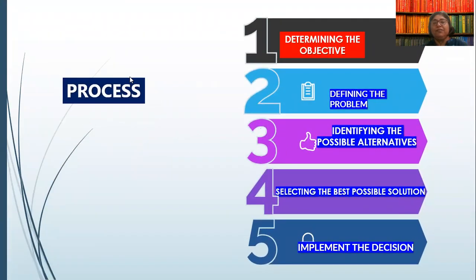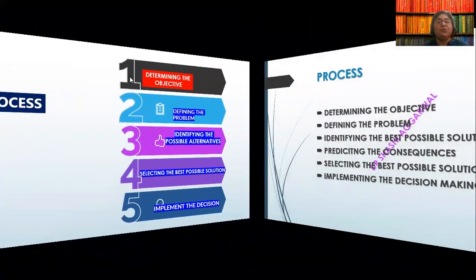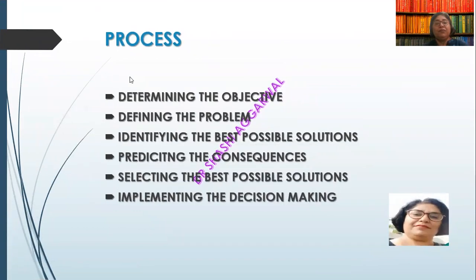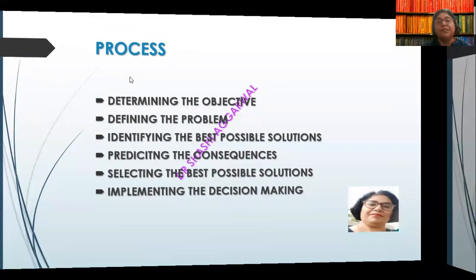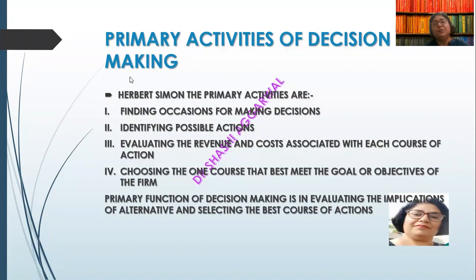What is the process of decision making? First, determining the objective — what is the goal, what is the target? On that basis, we define the problem we are facing. Then, for the best alternatives, we study the pros and cons, analyze all the constraints and inputs. On that basis, we find the best possible solution. Then we implement it, and then we follow up. We have to take the decision — this is the right situation.